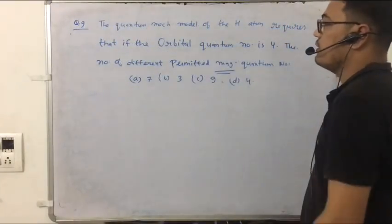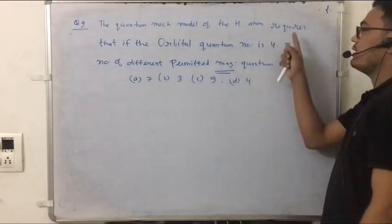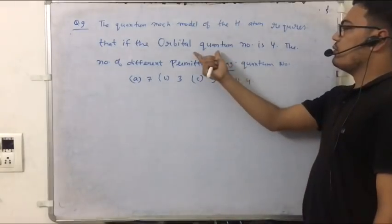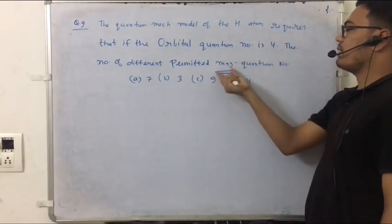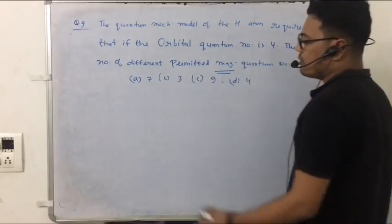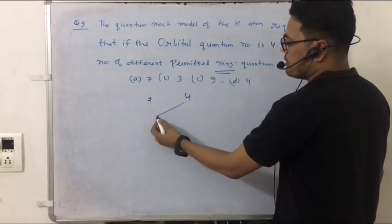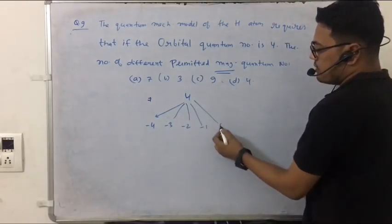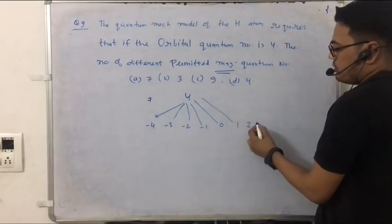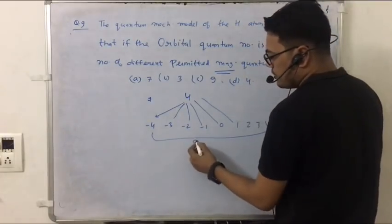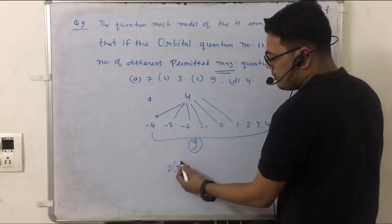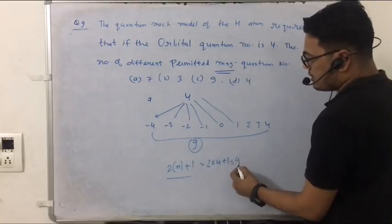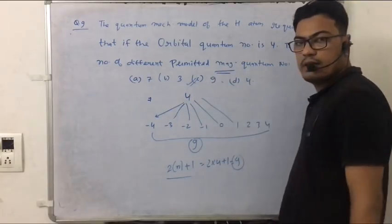The next question is question number 9. The quantum mechanical model of hydrogen atom. Basically, the question is about atomic structure. We have given the orbital quantum number 4, and we have to find the magnetic quantum number. It is very simple. So this is 4. So you will know how many quantum numbers are possible? Minus 4, minus 3, minus 2, minus 1, 0, 1, 2, 3, 4. So total will be equal to 9. And that is basically the formula: 2l plus 1. If you put the value of l to 4, then this will be the answer. So the answer will be 9, which is C.